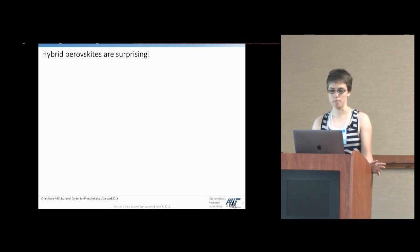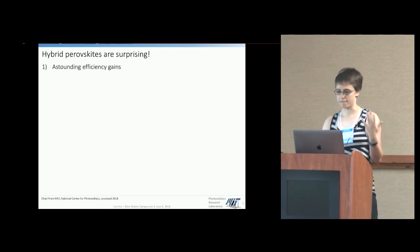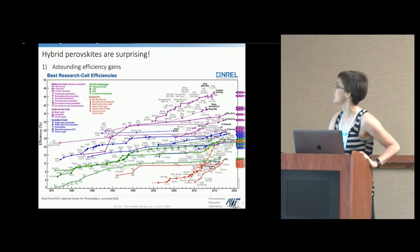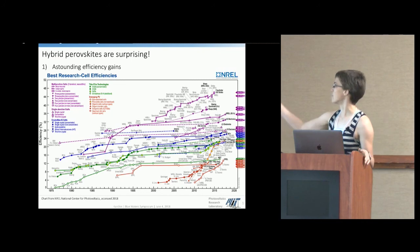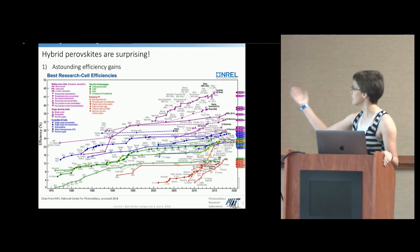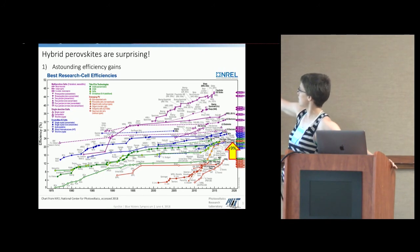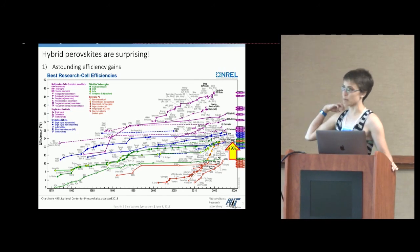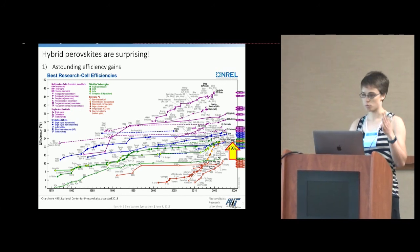So first off, these perovskite materials have seen really truly astounding efficiency gains since they've first shown up on the scene. So this is the National Renewable Energy Lab efficiency record chart, which charts the record energy power conversion efficiency of various types of PV technologies over the years. It's quite busy. I'll highlight the perovskites are right here, these red dots with the yellow fill, and since they showed up on the chart, they've seen about a 9% absolute efficiency improvement from about 14% to about 23% efficiency.